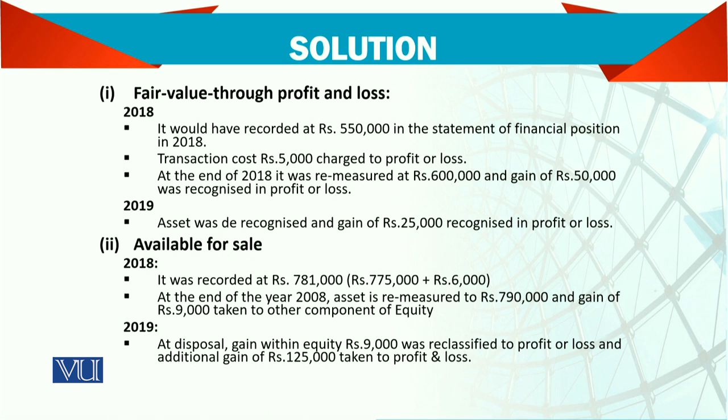The transaction cost for FVTPL should be charged directly to the profit and loss account — it is expensed immediately. Then in 2018, the investment is remeasured: the value increased by 50,000, so you debit assets and credit profit and loss account for that gain.